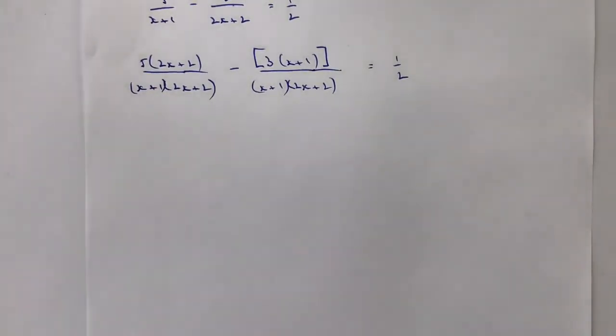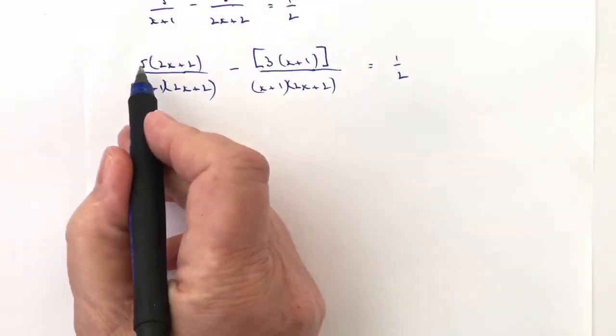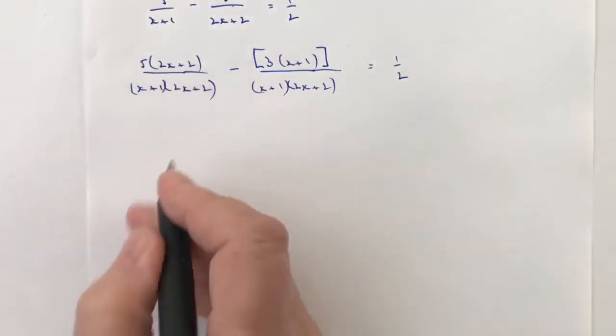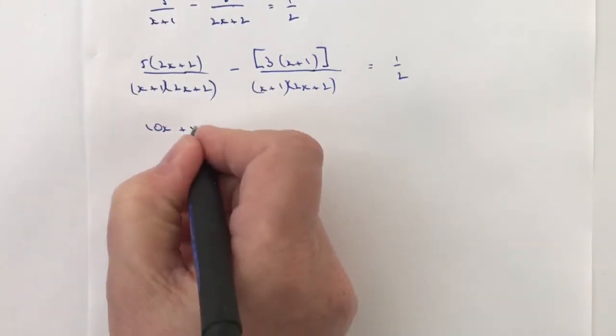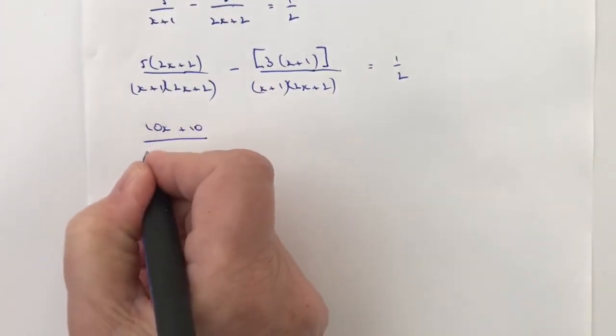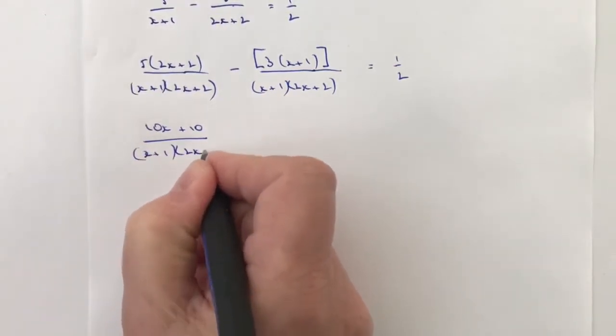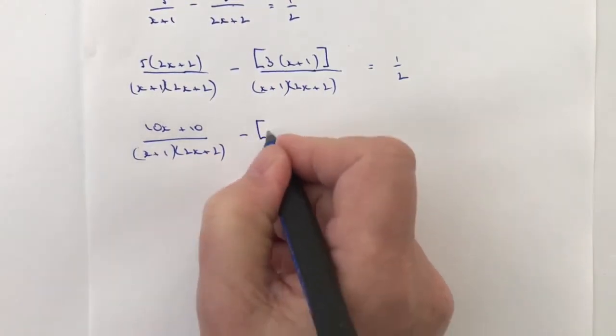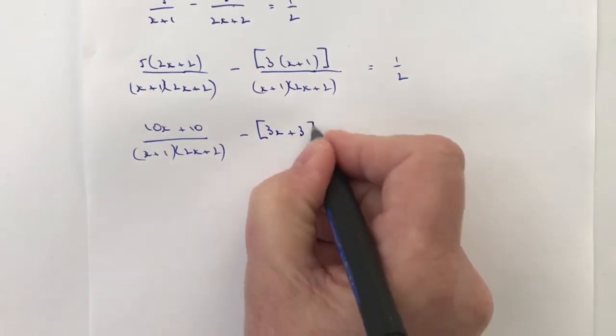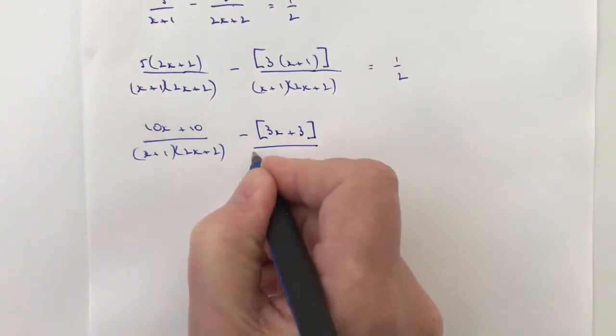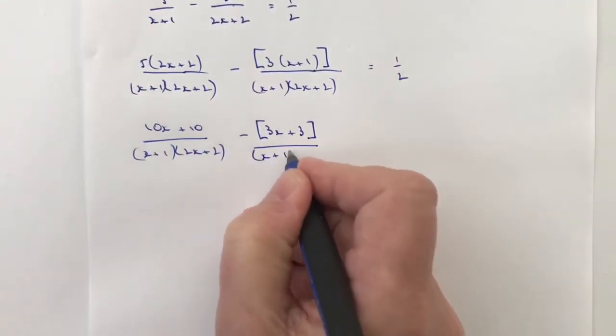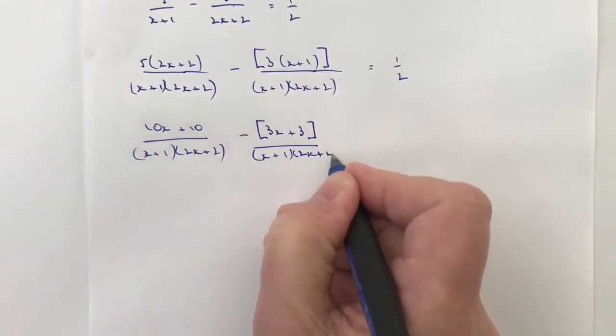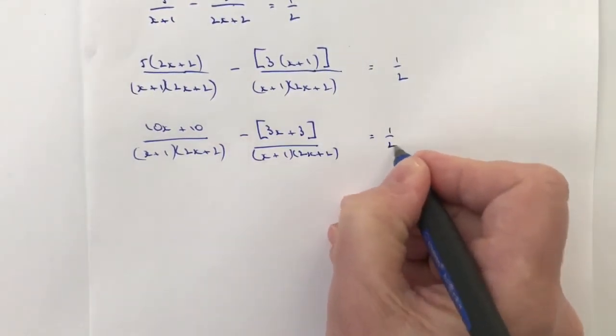So let's start now expanding this out and making it look a little bit more presentable. So I've got 5 times 2x plus 2, well that's going to be 10x plus 10 and again that's going to be divided by x plus 1 multiplied by 2x plus 2 and that's minus and I've got again my square brackets 3x plus 3 over x plus 1 2x plus 2 and that's going to be equal to a half.